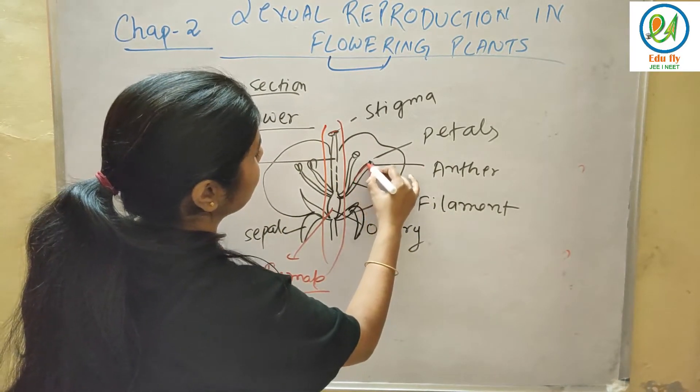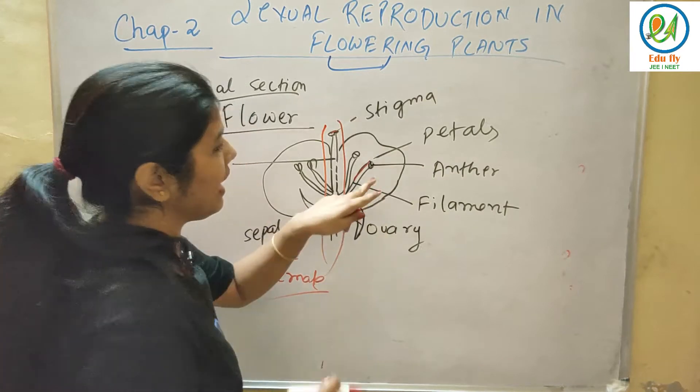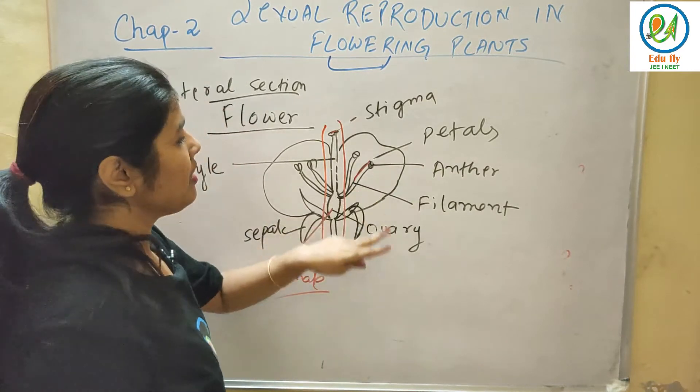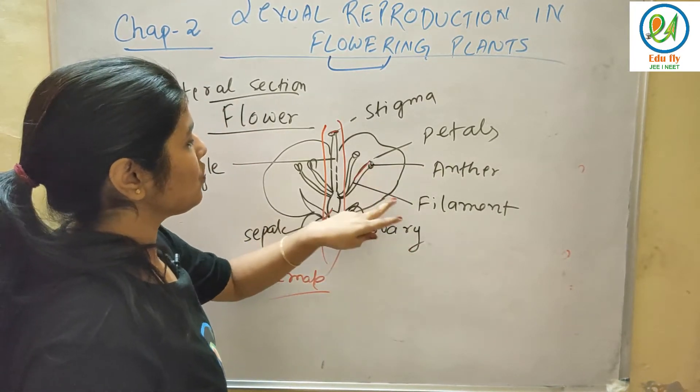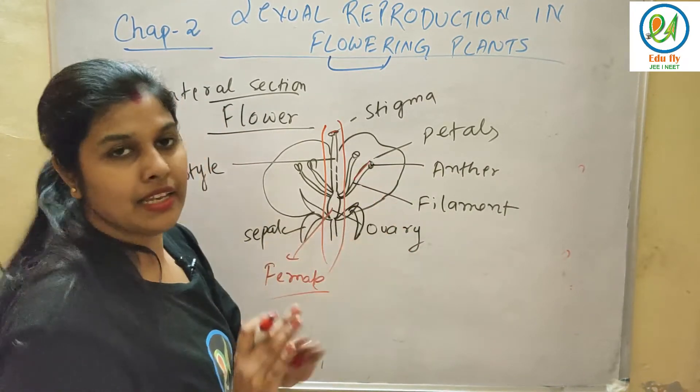This is the male reproductive organ — this is the anther and filament. These are the male organs of the flower.